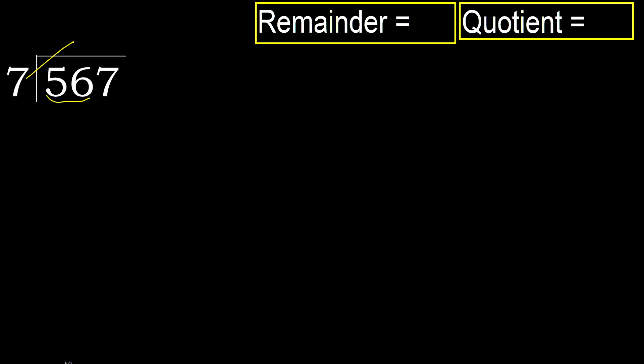7 multiply by which number is nearest to 56, but not greater. 7 multiply by 9 — 63 is greater. Multiply by 8 — 56 is not greater.